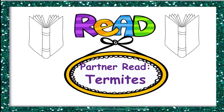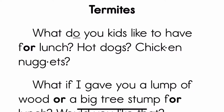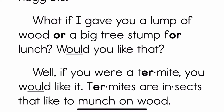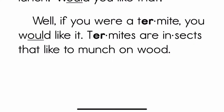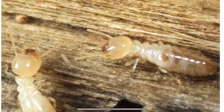Now open your reader. Let's read 'Termites.' What do you kids like to have for lunch — hot dogs, chicken nuggets? What if I gave you a lump of wood or a big tree stump for lunch? Would you like that? No! Well, if you were a termite, you would like it. Termites are insects that like to munch on wood.